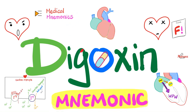Hey, it's Medicosis Perfectionitis, where medicine makes perfect sense. We continue our medical mnemonics playlist. Today's topic is digoxin mnemonic. Digoxin belongs to a class of medications known as cardiac glycosides, also known as digitalis. This digitalis has three members: member number one, digoxin; member two, digitoxin; and member three is Ouabain.